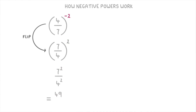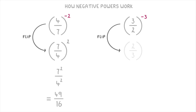That equals 49 over 16. For the last example, let's look at 3 over 2 to the power of negative 3. First you flip the fraction upside down to become 2 over 3, and change the power of negative 3 to a positive 3. Then we apply that power of 3 to the top and bottom individually to get 2 cubed on top divided by 3 cubed on the bottom, which is just 8 over 27.